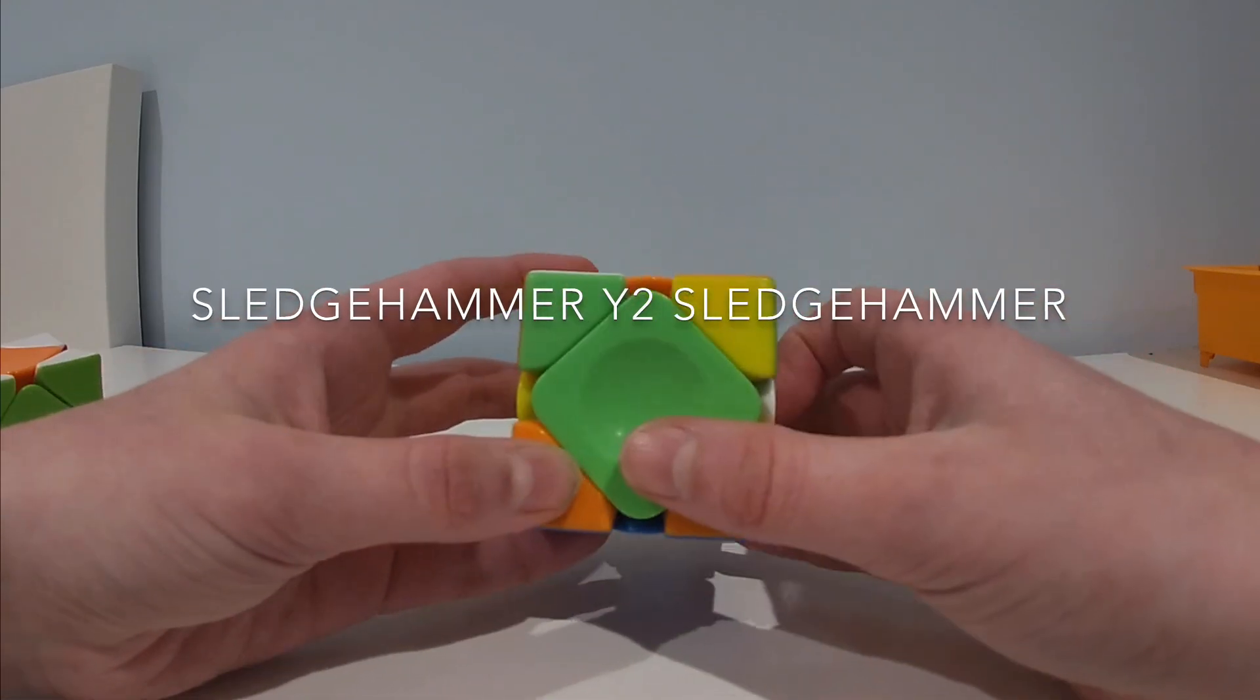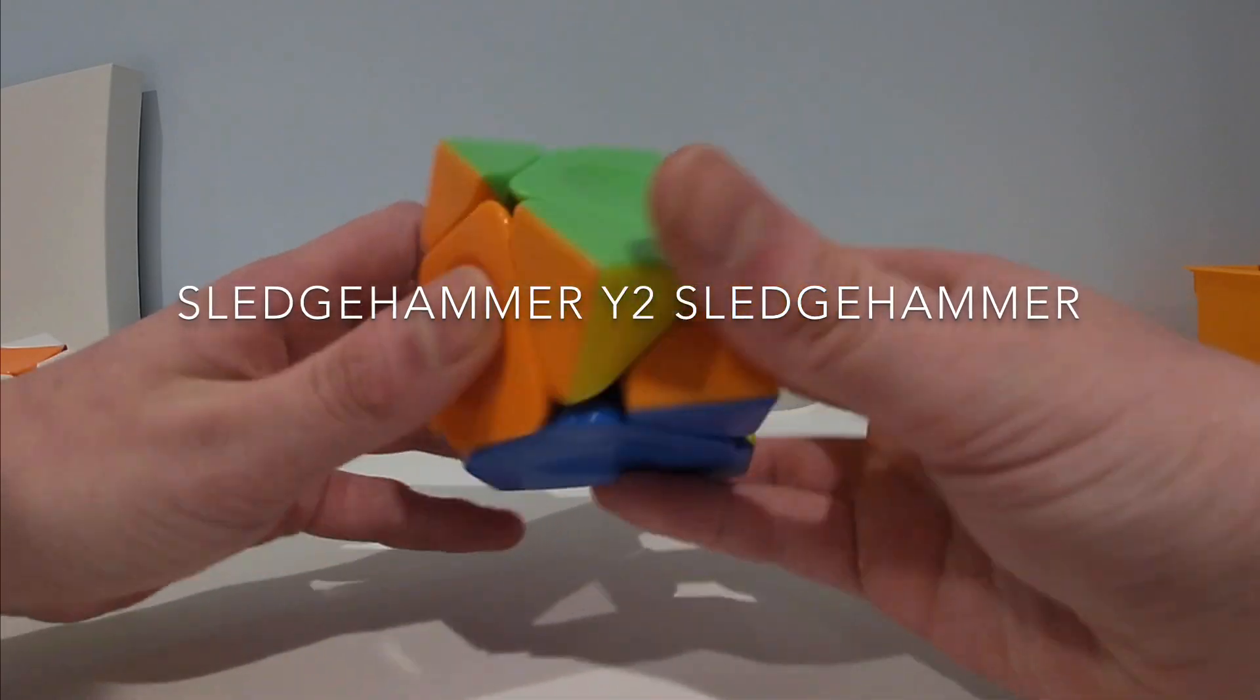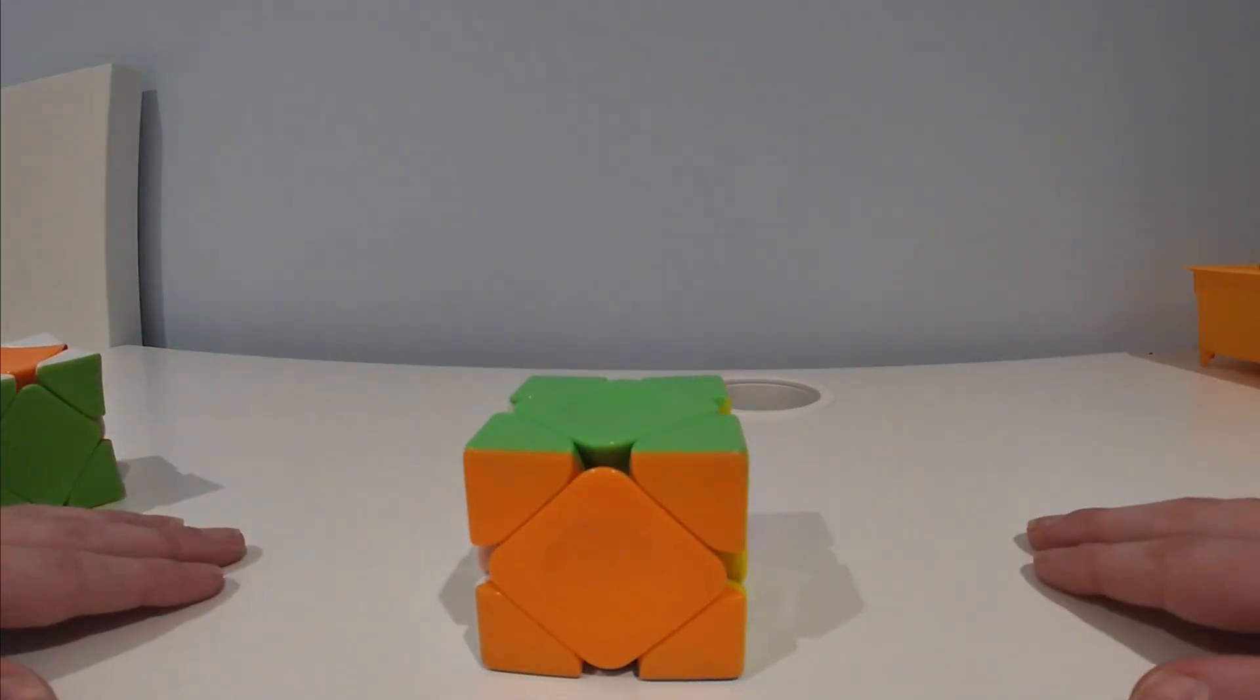Y2, 180 degree rotation. R prime, F, R, F prime. And then you have solved the Skewb.